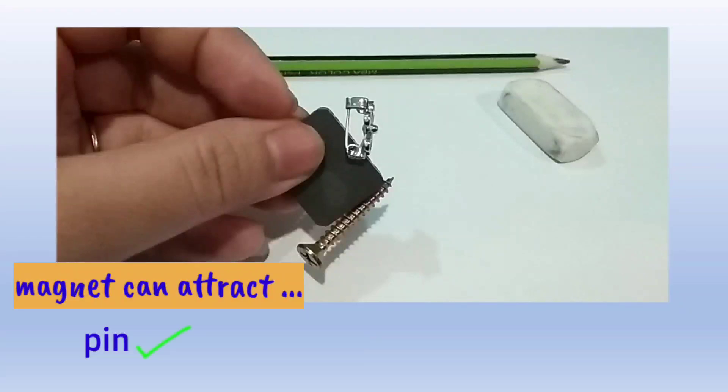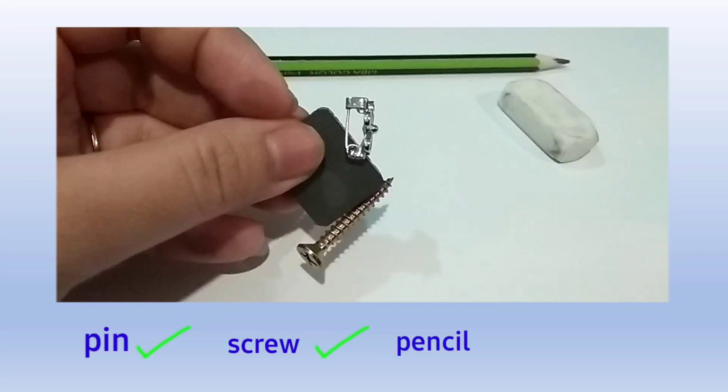So, magnets can attract pins and screws, but they cannot attract pencils and erasers.